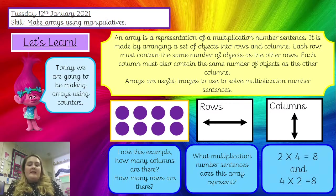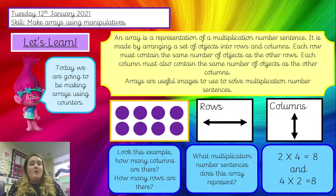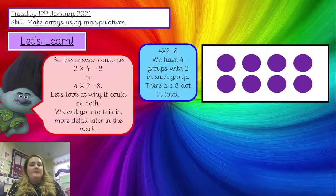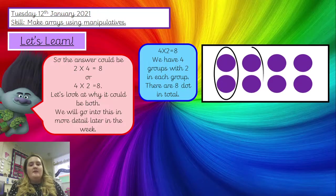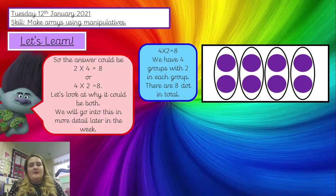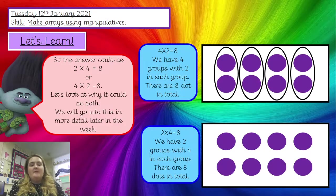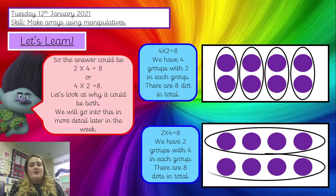The answer is two times four equals eight, and four times two equals eight. So this array represents both of these number sentences, and we're going to look at why it can be both later in the week. For this array, we have four groups with two in each group — one, two, three, four — which gives us four times two equals eight. We also have two groups with four in — one, two. Two groups with four equals eight. The answer is eight because there are eight dots in total.